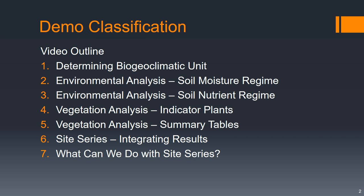First I'll talk about determining the biogeoclimatic unit, and then we'll move into environmental analysis doing the soil moisture regime and then the soil nutrient regime. Next, vegetation analysis using indicator plants and then summary tables, then putting it all together to figure out what the site series of our location is, and then lastly, once we've figured out that site series, what can we do with it.